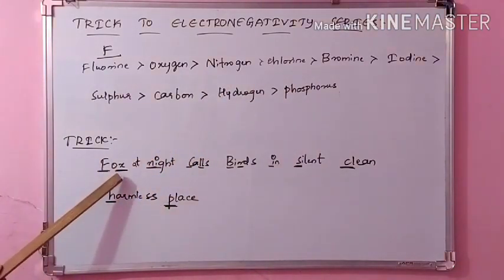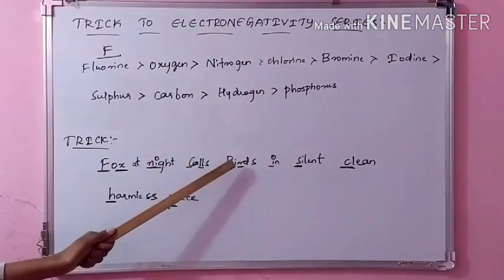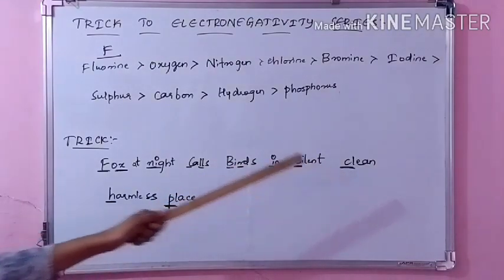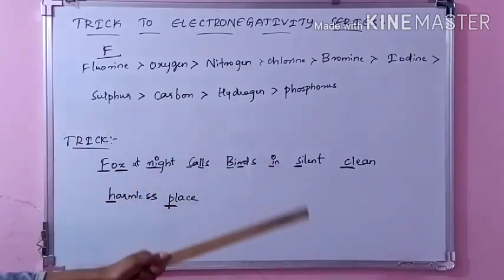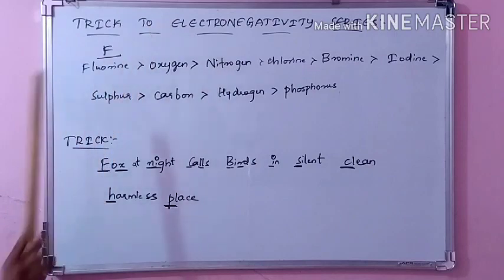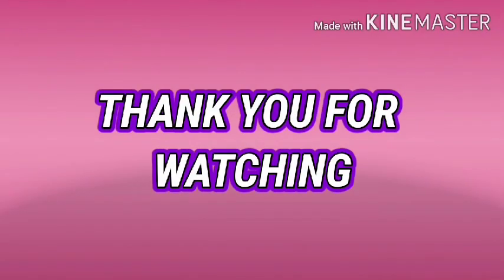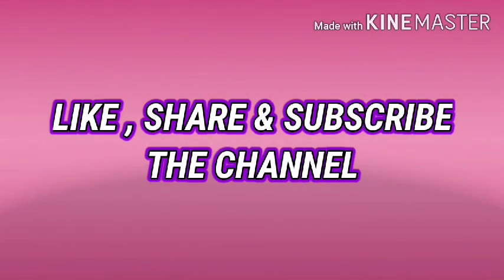So from this trick you are taking: fluorine, oxygen, nitrogen, chlorine, bromine, iodine, sulfur, carbon, hydrogen, and phosphorus. So easy to remember the electronegativity series! I hope this trick will help you to easily remember the electronegativity series.